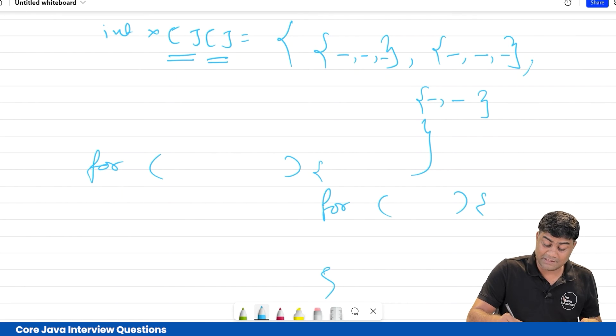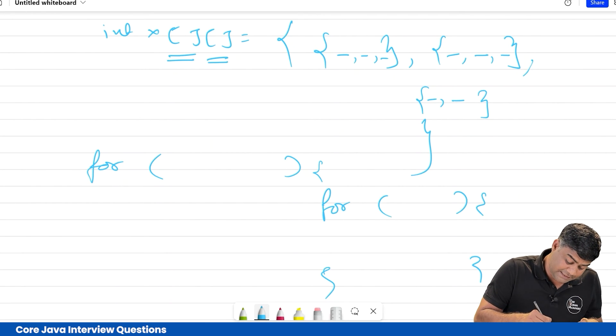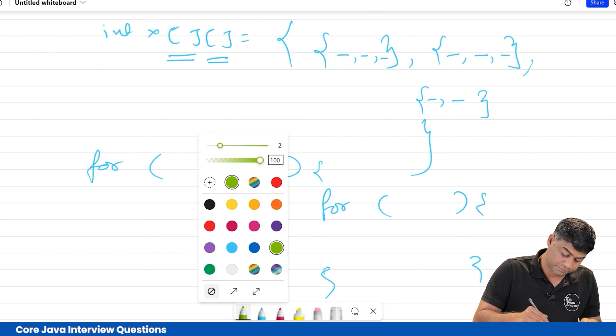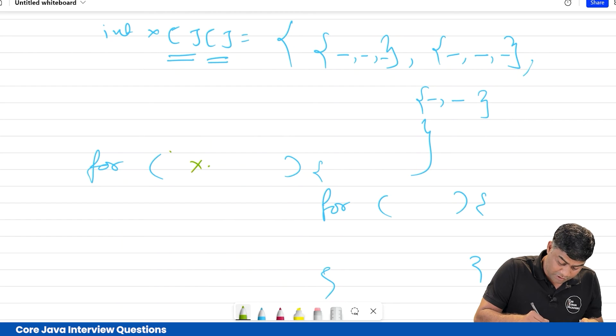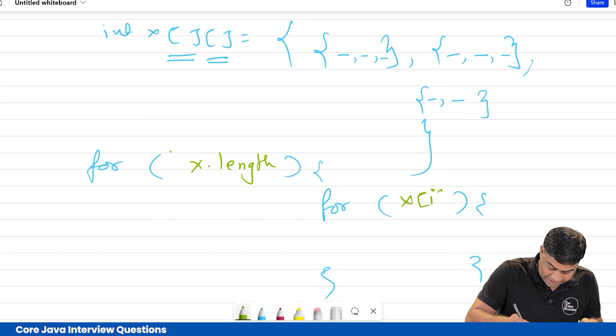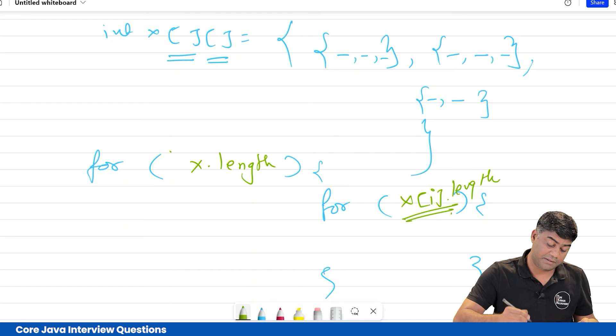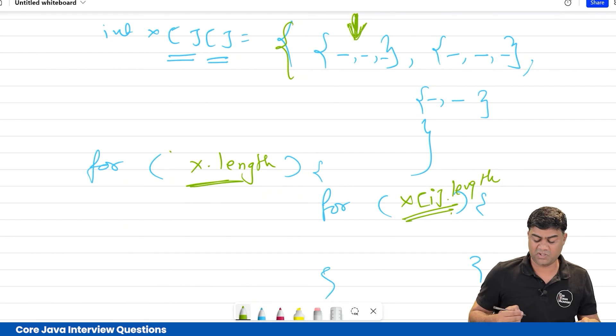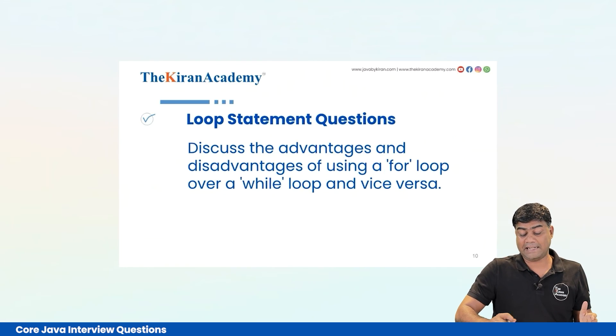Two for conditions will be there like this. You need to explain, guys. This is x dot length, you will be putting condition here as x dot length. Just remember this, very simple. Here the condition would be x dot length. Here x of i dot length. X dot i means this second for loop will be referring to this. First is referring to complete this. Very simple, you can practice for these questions.